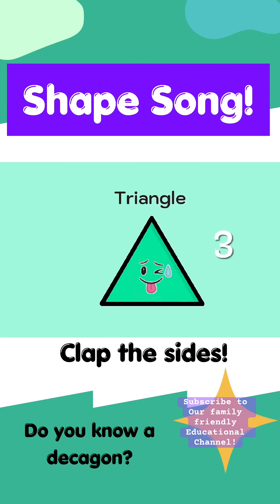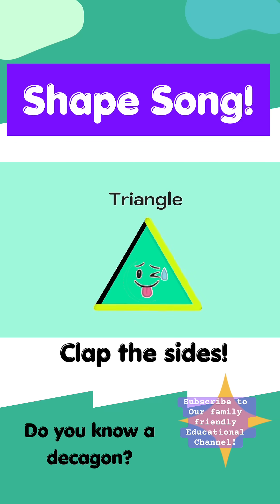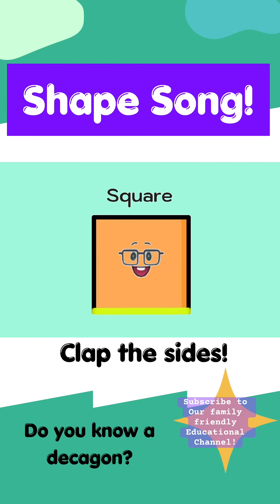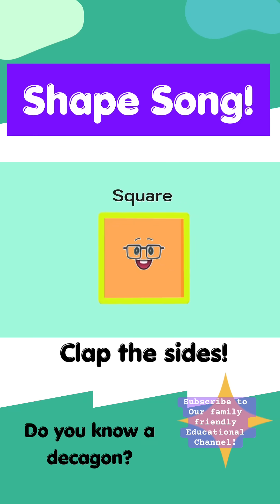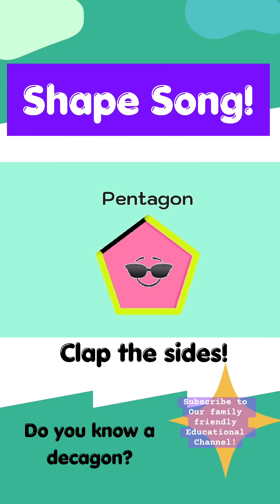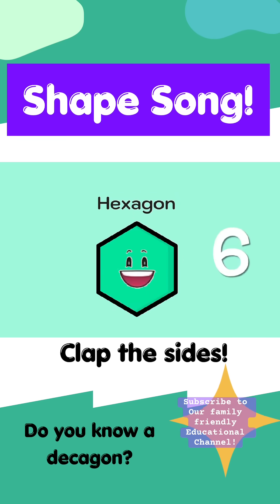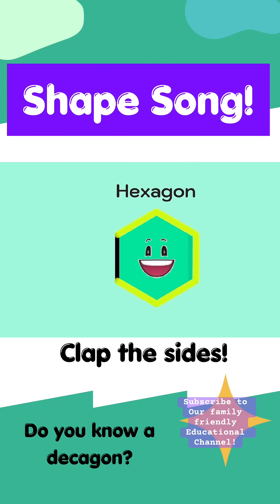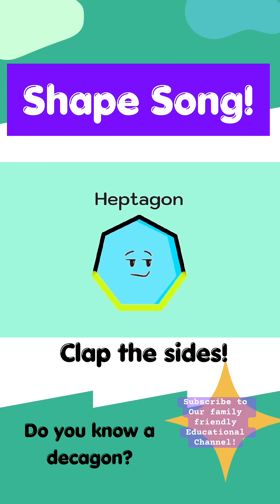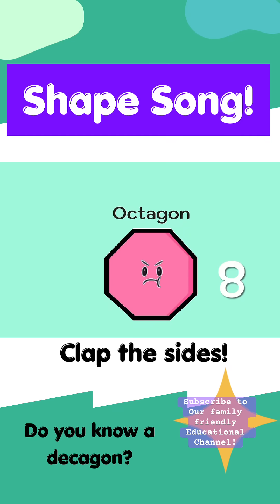A triangle has three sides. A square has four sides. A pentagon has five sides. A hexagon has six sides. A heptagon has seven sides. An octagon has eight sides.